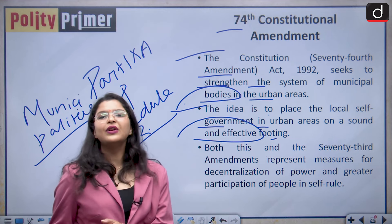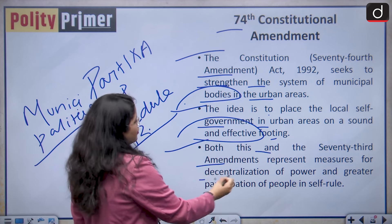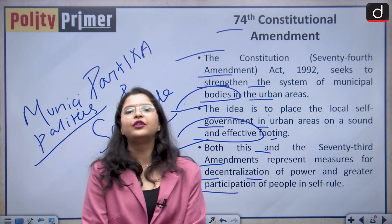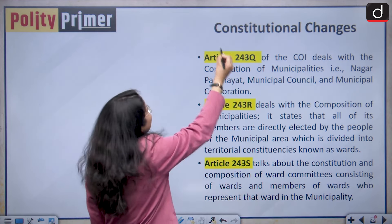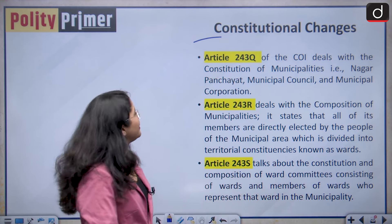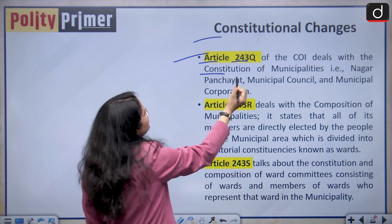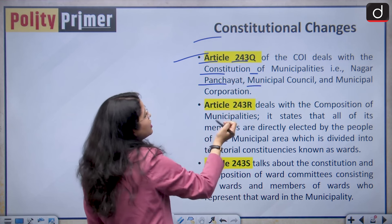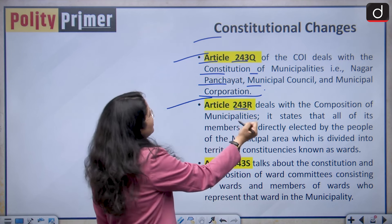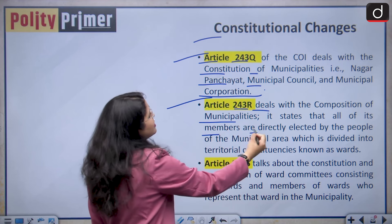You will have local self-government in the village areas as well as in the urban areas. Both the 73rd and 74th amendments represent measures for decentralization of power and greater participation of people in self-rule. Article 243-Q of the constitution of India deals with the constitution of municipalities — that is, Nagar Panchayat, municipal council, and municipal corporation in a city. Article 243-R deals with the composition of municipalities: all of its members are directly elected by the people of the municipal area, which is divided into territorial constituencies known as wards.